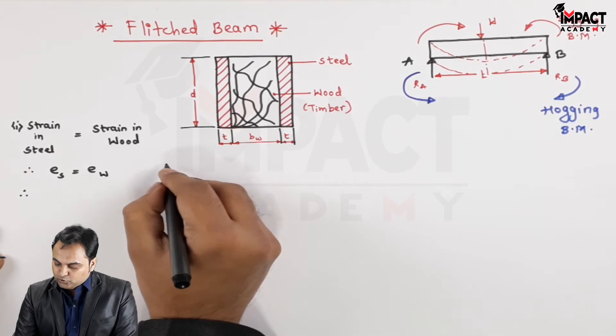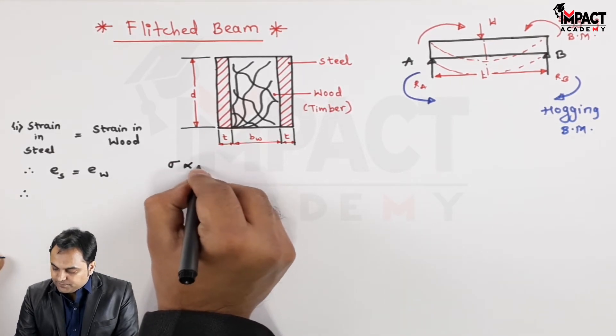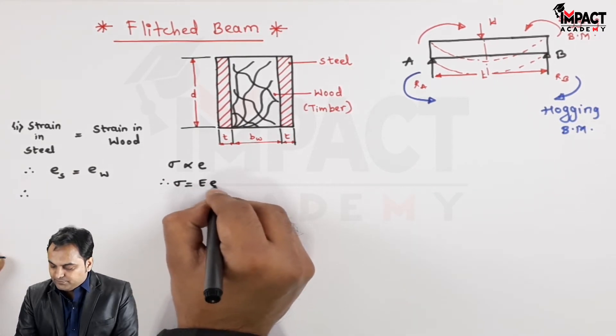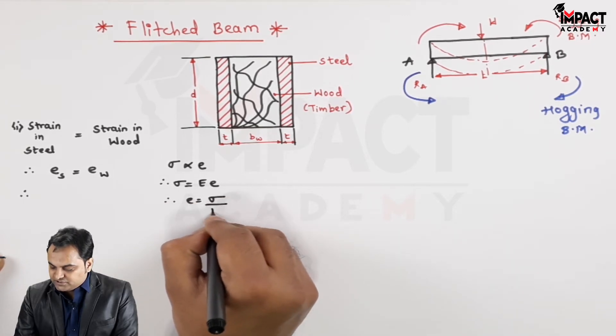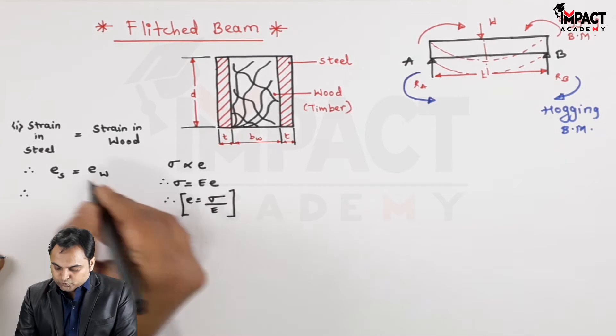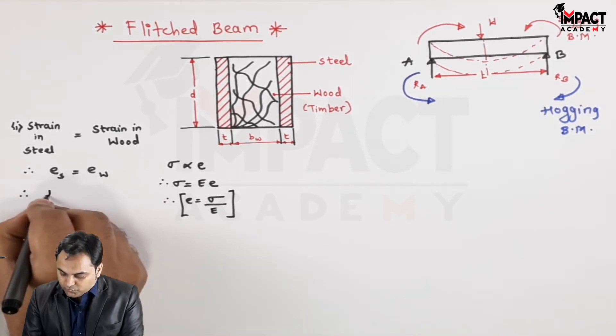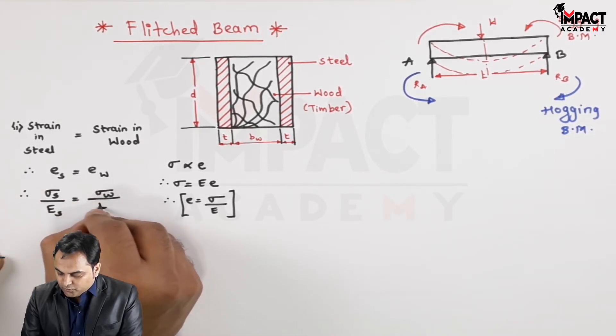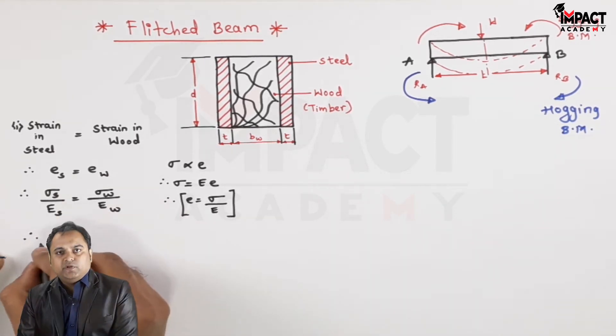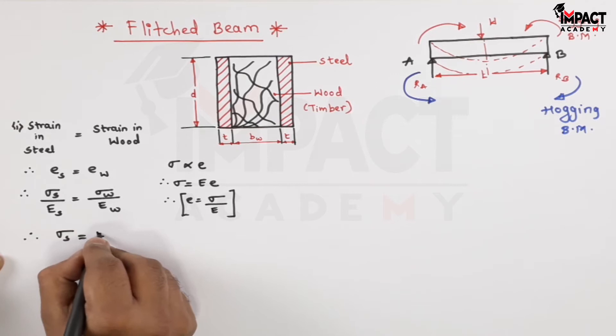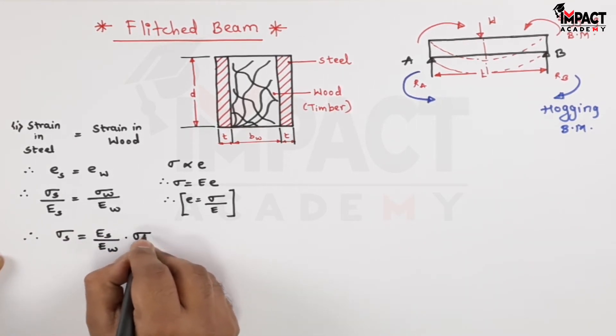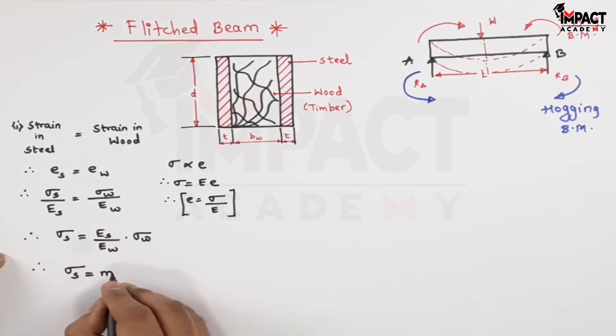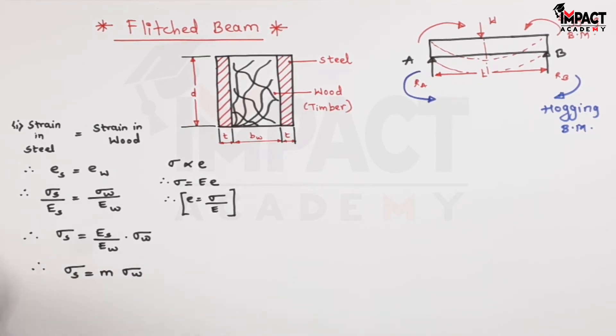Therefore, now as per Hooke's law, stress is directly proportional to strain. When I remove the proportionality sign, I have a constant which is capital E called as Young's modulus. So strain is basically stress upon Young's modulus. So this strain would be replaced with stress in steel upon Young's modulus in steel, and similarly for wood, stress in wood upon Young's modulus of wood. This E subscript s, when it goes to the other side, it becomes E subscript s upon E subscript w into sigma w. Therefore, sigma s would be Es by Ew, is denoted by a ratio m, and this ratio is called the modular ratio.